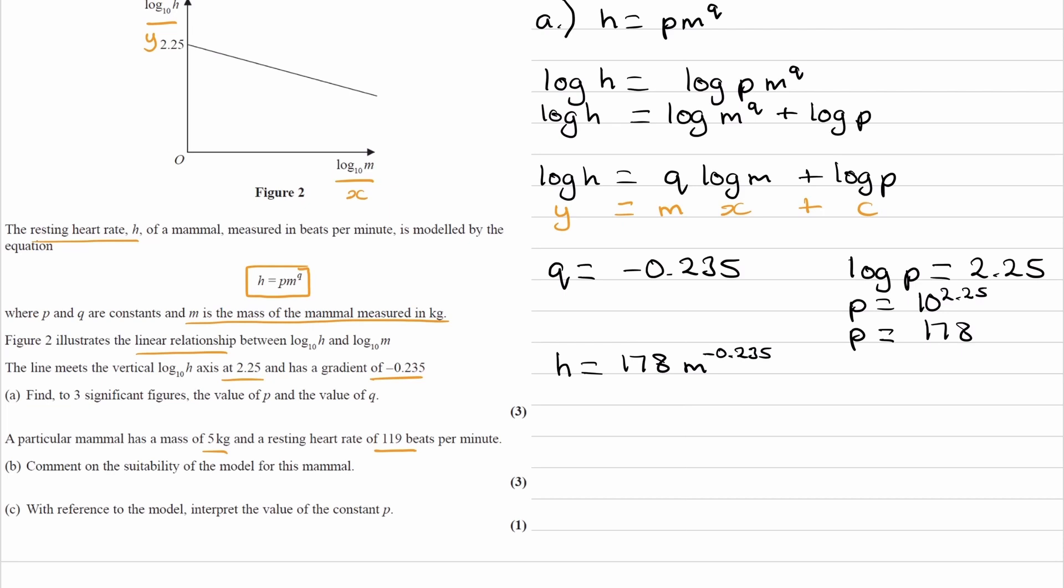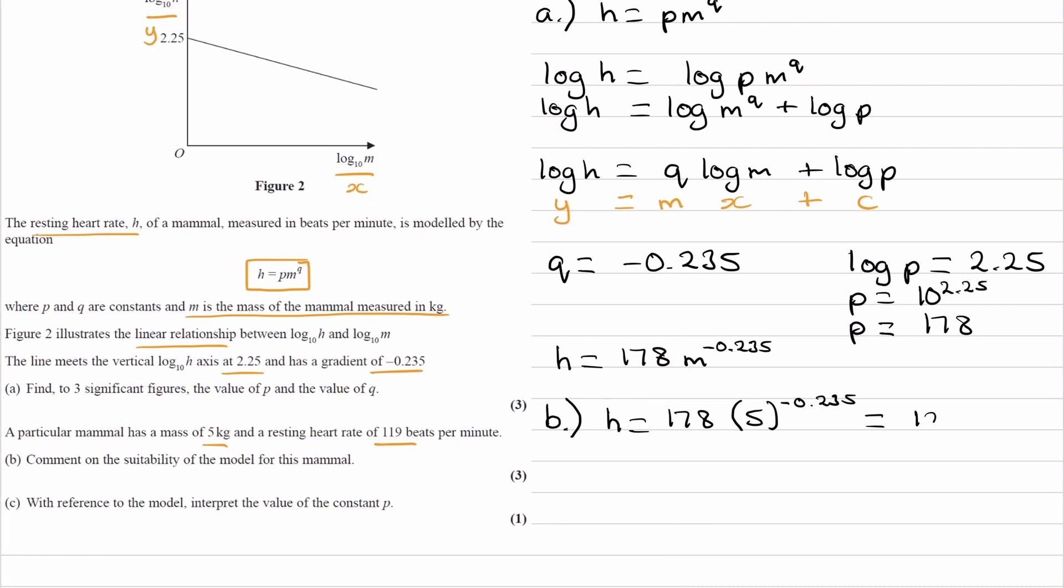So then we'd put them into our equation. We'd put one of them into our equation and work out the other. So I'm actually going to put in mass into our equation. So h is then equal to 178 times the mass, which is 5 to the power of minus 0.235. And this then gives us 122, approximately, which is about right. It's not too far off the 119, so it would be suitable.